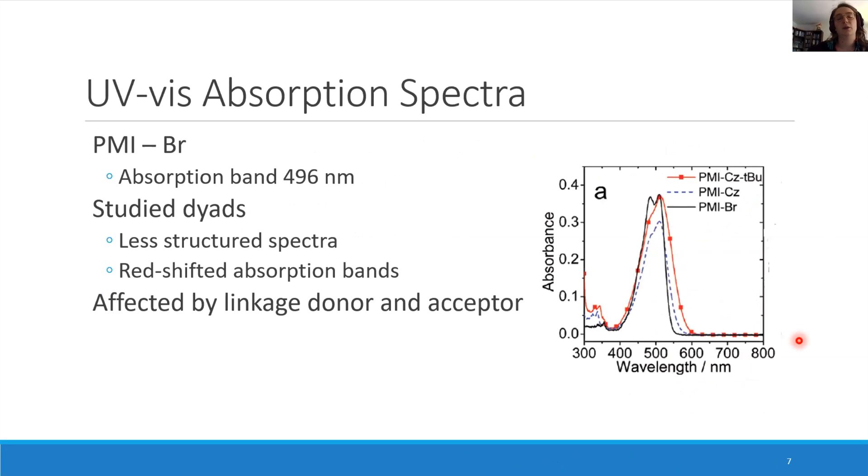They also studied the absorption spectra. They compared the bromide dyads with the CN-linked dyads and found that for the CN dyads, the spectrum is less structured and there's also a red shift observed. This is an indication for the coupling, the electronic coupling between the donor and acceptor. This is especially clear for the more electron-donating carbazole with tert-butyl groups.